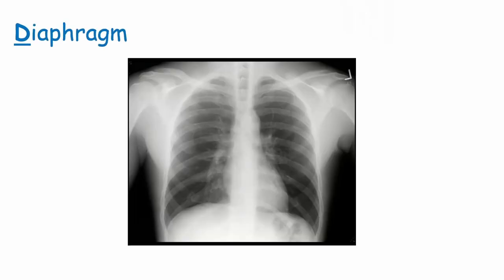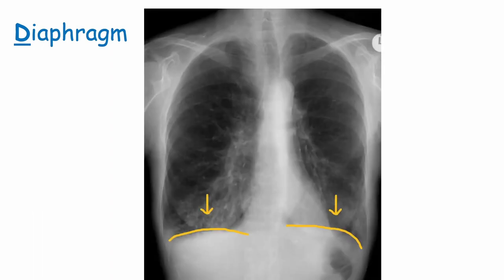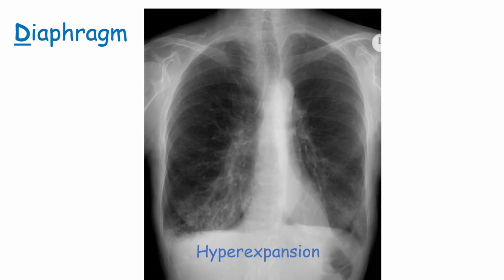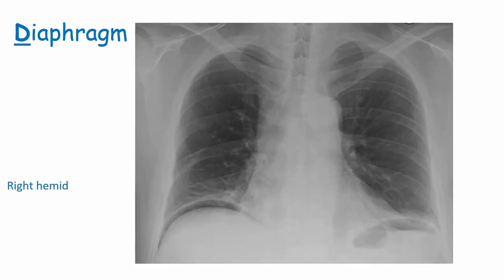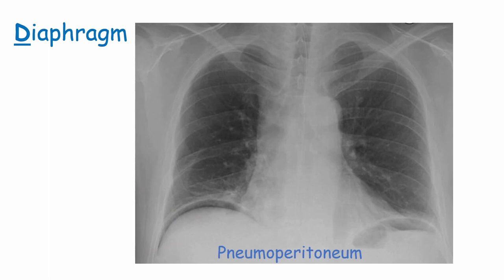D is for Diaphragm. On the chest X-ray, the diaphragms should be dome shaped, with the right sitting slightly higher than the left. Check that the diaphragms are not flattened. Air in the stomach is a normal finding under the left hemidiaphragm, but there shouldn't be air under the right hemidiaphragm. This patient's diaphragm has been flattened downwards — this is an example of hyperexpansion in a patient with COPD. Notice how the rib spaces are larger than normal. This next patient has air under their right hemidiaphragm, known as a pneumoperitoneum, which could be caused by intestinal perforation and therefore could also be a surgical emergency.